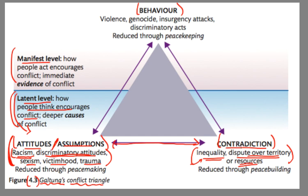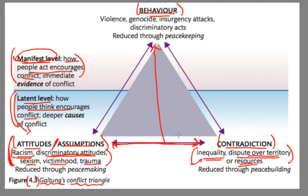Both of these show up at the manifest level through observable behavior. That's why it's called manifest — how people act encourages conflict. You have these attitudes, contradictions, and assumptions brewing underneath the surface, and then there's some sort of catalyst that sparks the fire. Then you have violent behavior: acts of genocide, insurgency attacks, and discriminatory acts — all of which are observable and measurable by outside observers.